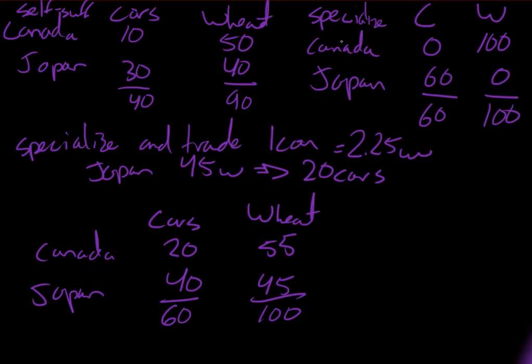Regardless, if you look at self-sufficiency compared to the fully specialized case, the biggest thing you should notice is that you will always have a situation where you should be able to produce more of both goods than in self-sufficiency. The total should be more. And that's a good enough reason to understand that in total, both should be able to consume more than before.